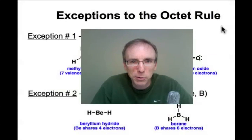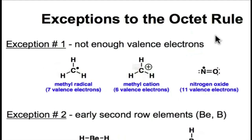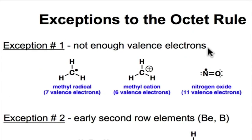There are some important exceptions to the octet rule that we'll talk about in this webcast. The first exception has to do with molecules that don't have enough valence electrons. A good example, and an important example, is the methyl cation that's shown here. Only 6 valence electrons.